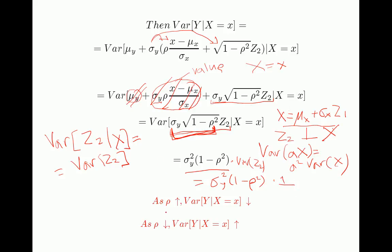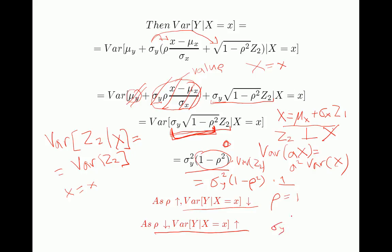As rho — the correlation coefficient between X and Y — increases, the conditional variance of Y given X decreases. For example, if rho equals 1, this term would be 0, and the conditional variance would be 0 — which makes sense, because if Y and X are perfectly correlated and X takes a value of x, then we know there's only one value Y would take, so there would be no conditional variance. And as rho decreases, the conditional variance increases. If rho is 0, we obtain just sigma_y squared — which makes sense, because that would simply be the variance of Y, not depending on X at all.